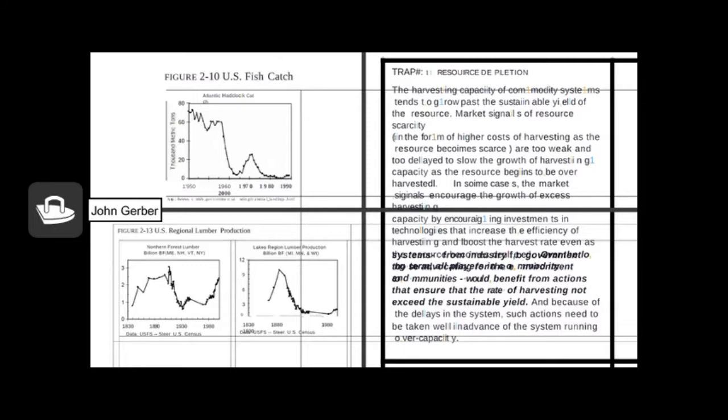And here's some data from what's happened in the U.S. You can see the top chart Atlantic haddock production has plummeted in the 1960s. U.S. regional lumber production has dropped. This is all due to increased harvesting.